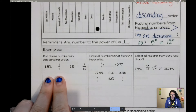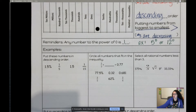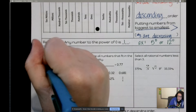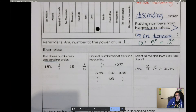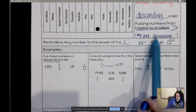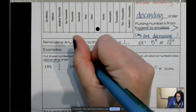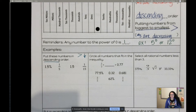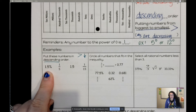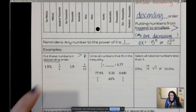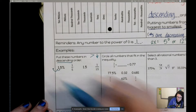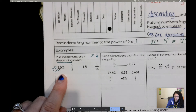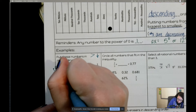For this first example, I want to put numbers in descending order — descending means going from big to small, numbers are decreasing. First we need to turn all numbers into decimals. So 1.5% — remember, to turn a percent into a decimal we move the decimal point to the left — so 1.5% in decimal form is 0.015.